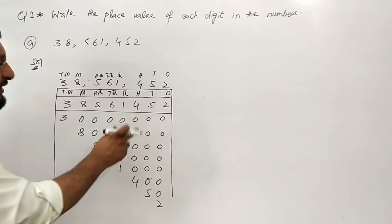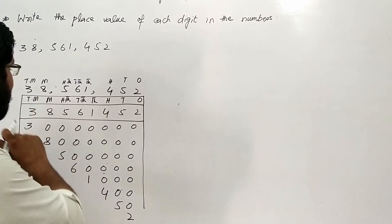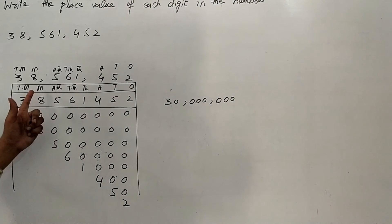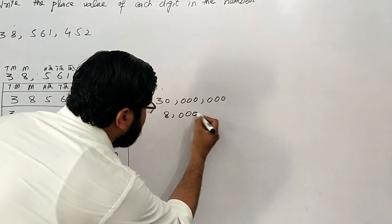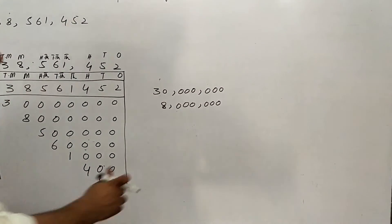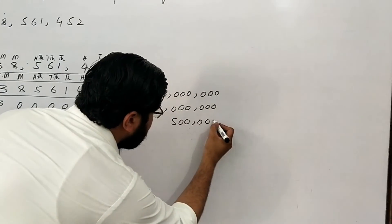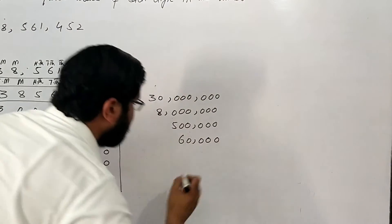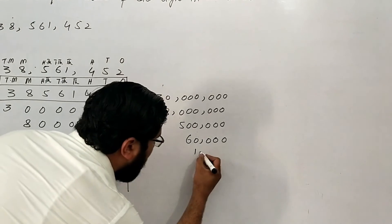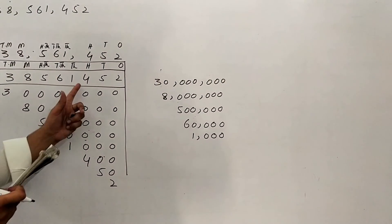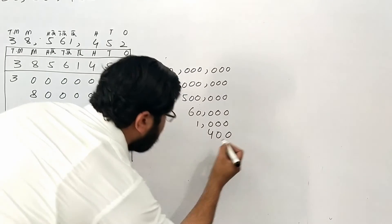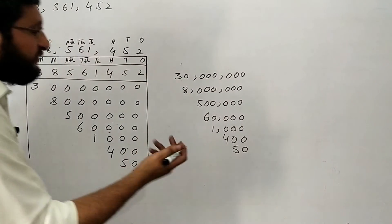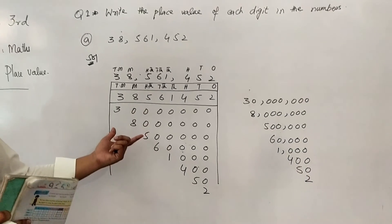The digital values are also equal when written in expanded form. So 3 in ten millions equals 30 million, 8 in millions equals 8 million, 5 in hundred thousands equals 500,000, 6 in ten thousands equals 60,000, 1 in thousands equals 1,000, 4 in hundreds equals 400, 5 in tens equals 50, and 2 in ones equals 2. That is the expanded form.